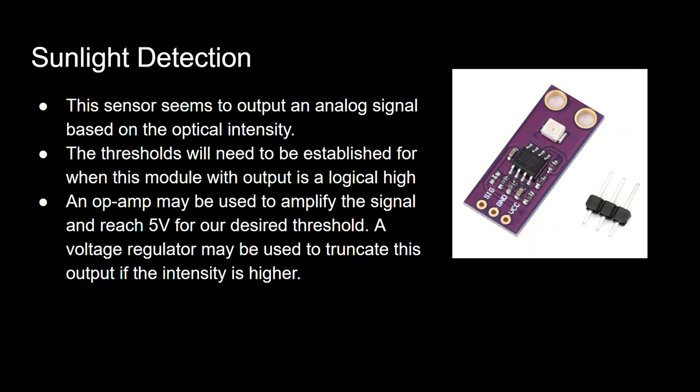Sunlight detection: this sensor outputs an analog signal based on the optical intensity. A threshold will need to be established for when the module output is a logic high. An op-amp may be used to amplify the signal and reach 5V for our desired threshold. A voltage regulator may also be used to truncate the output if the intensity is higher.